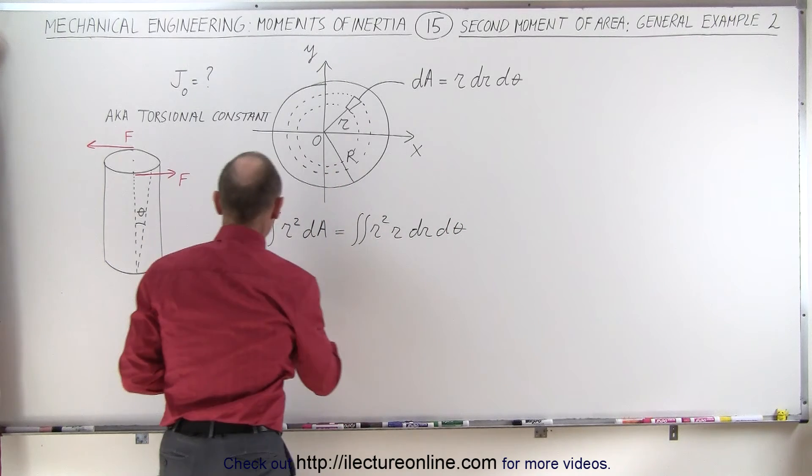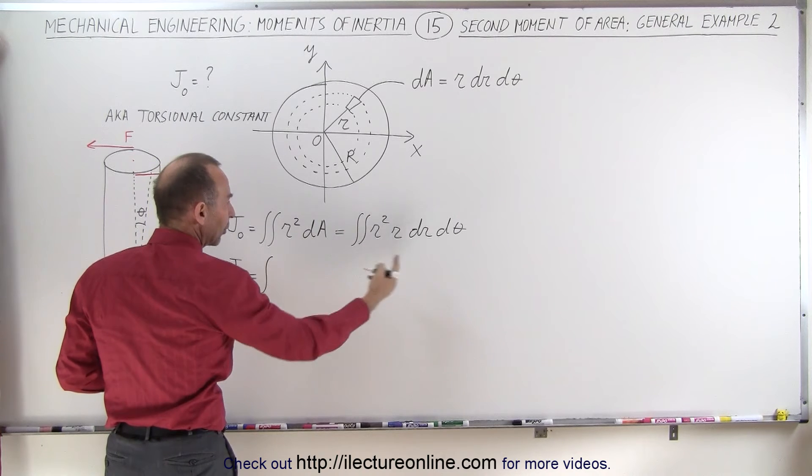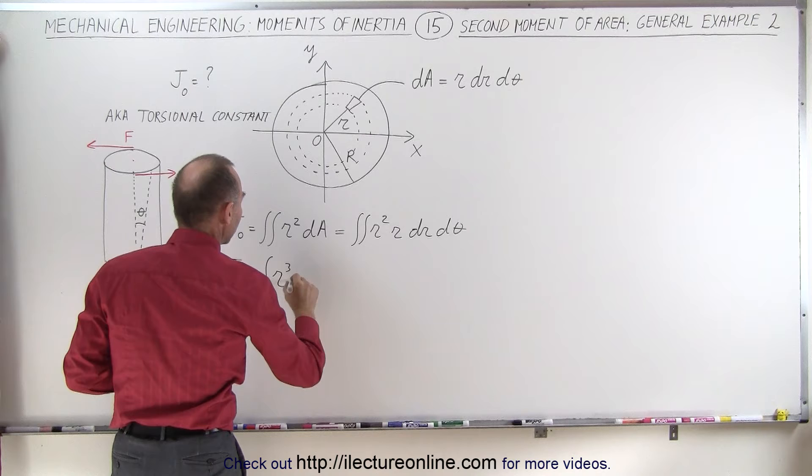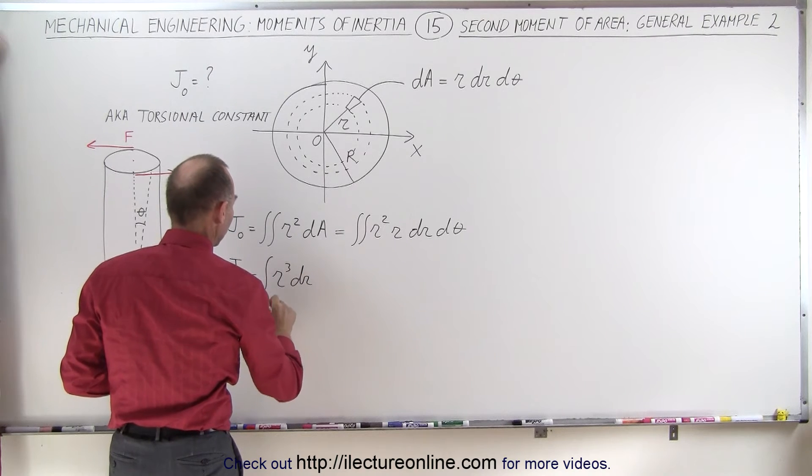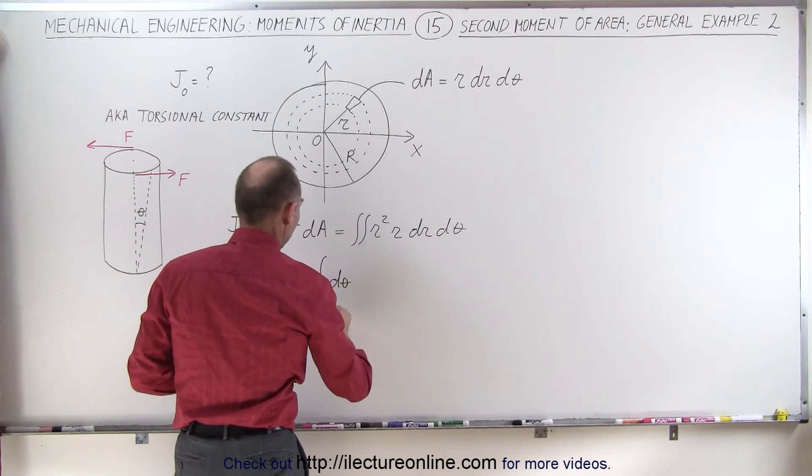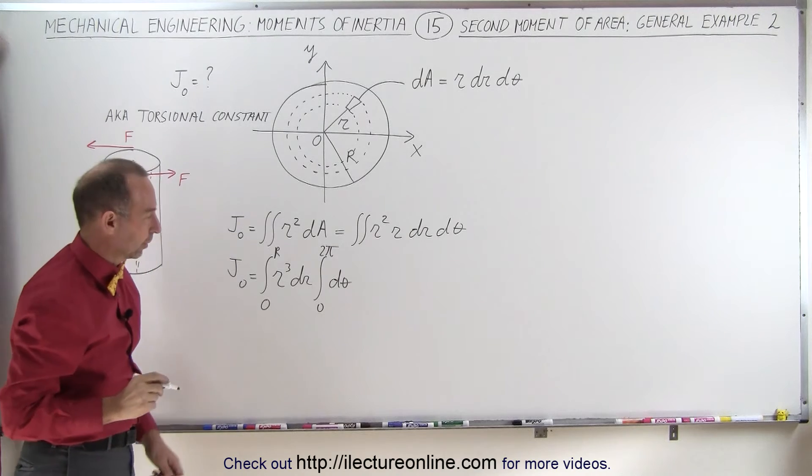Now this can then be rewritten as the double integral, and I'm going to separate this out. We're going to get r cubed times dr integrating from zero to r, times the second integral, which is going to be d theta from zero to two pi, because we're going to integrate all the way around the circle.